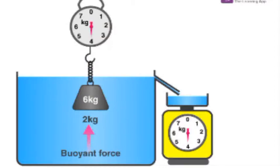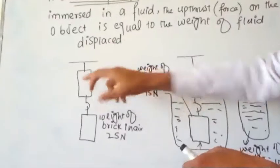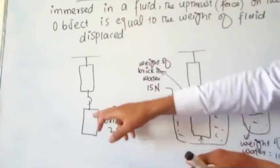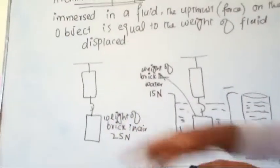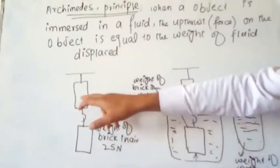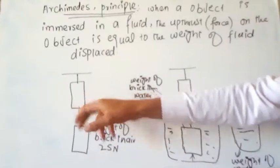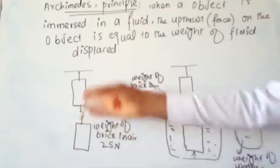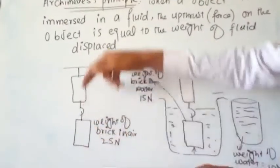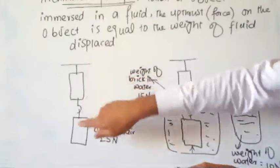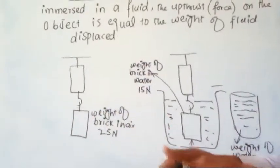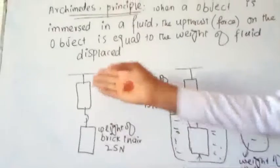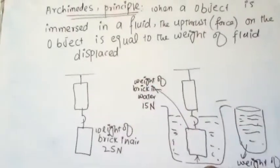For example, this is a brick and the weight of the brick in the air is 25 Newton. We can find the weight of this brick using a spring balance. The weight of this brick in the air is 25 Newton using the spring balance.